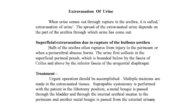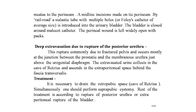Treatment: urgent operation should be performed. Multiple incisions are made to drain the extravasated urine. Suprapubic cystostomy is performed. With the patient in the lithotomy position, a metal bougie is passed through the bladder and internal urethral meatus to the perineum, and another metal bougie is passed from the external urinary meatus to the perineum. A midline incision is made on the perineum, and by the railroad technique, an elastic tube with multiple holes or a Foley catheter of average size is introduced into the urinary bladder.